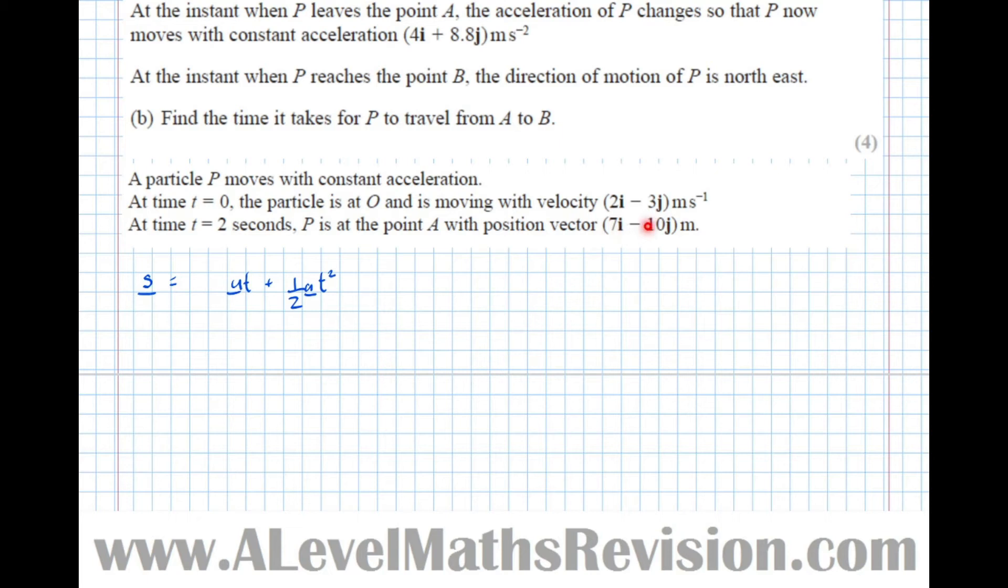At A, it starts at the point 7 minus 10. When it's at A, it's at the position 7 minus 10. We're going to reset our stopwatch from this point. So our displacement is 7 minus 10 plus any extra displacement after it hits A. Now we know the acceleration after it hits A, so we can write S equals 7 minus 10 plus UT plus half of the actual acceleration, which is 4i plus 8.8j.